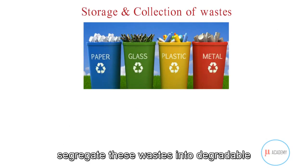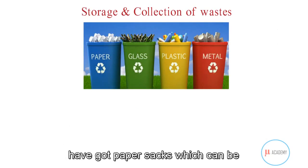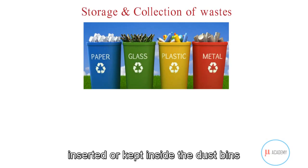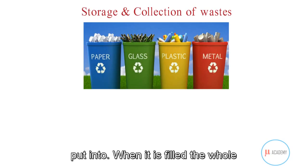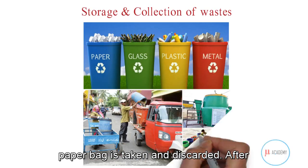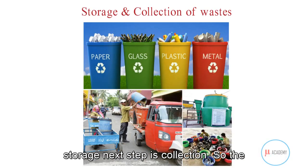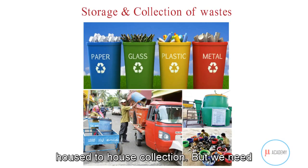Color-coded waste bins help segregate waste into biodegradable or non-biodegradable categories. We now also have paper sacks which can be inserted inside the dustbins, into which all the waste is placed. When the bag is filled, the whole paper bag is taken out and discarded. After storage, the next step is collection.